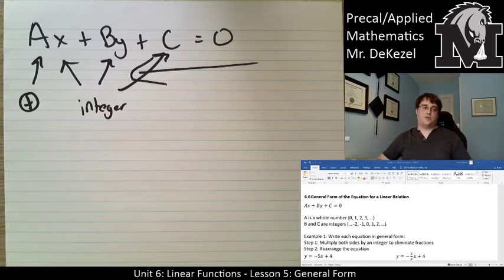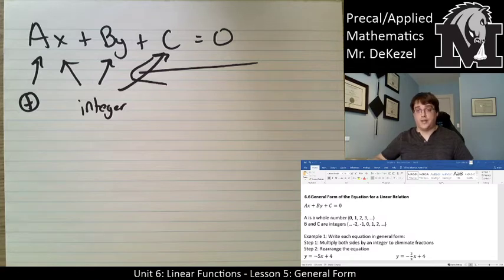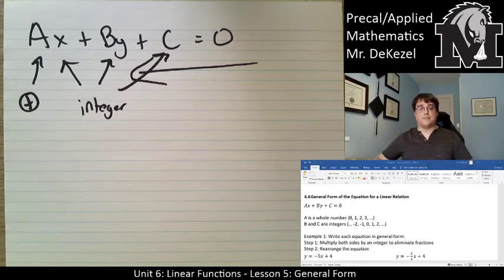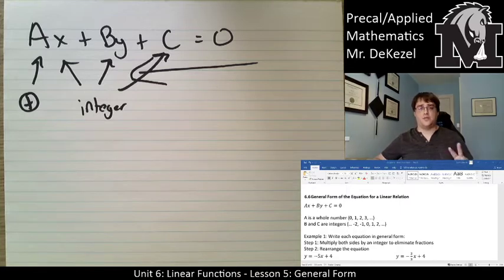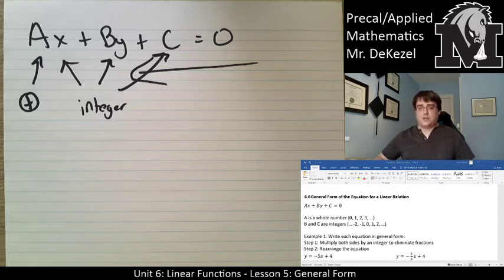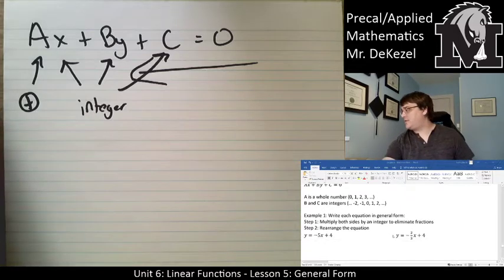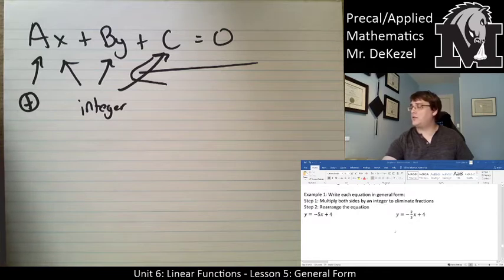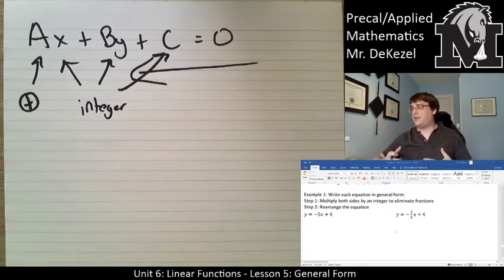We're going to focus on how we take an equation in different forms — slope-intercept and slope-point — and turn them into general form. General form has some benefits: it is very easy to draw the line from it in two simple steps. The first thing we do is multiply everything by certain numbers to eliminate any fractions.